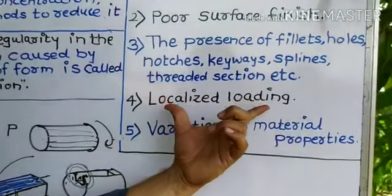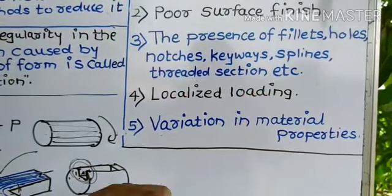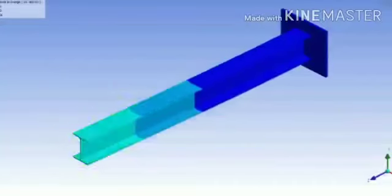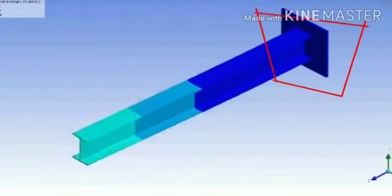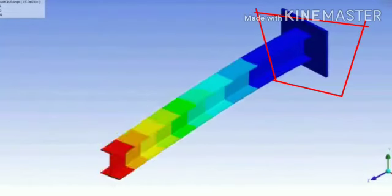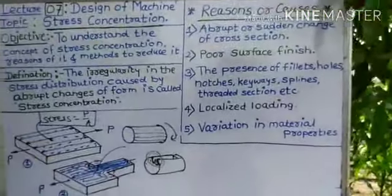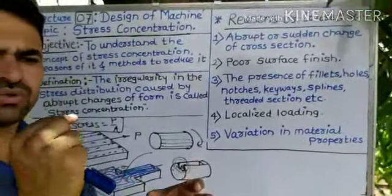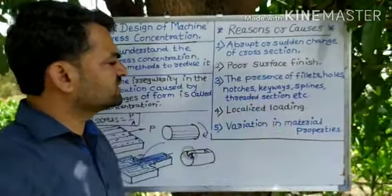The fourth reason is localized loading — maximum load will act on a minimum area. The total load is going to act at maximum concentration over a specific section. This can happen in gearing: while transmitting power, only one tooth of one gear will be in contact with the tooth of another gear, resulting in localized loading that may cause stress concentration.